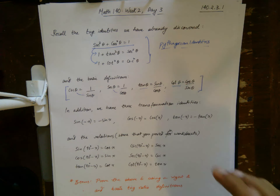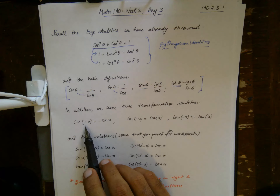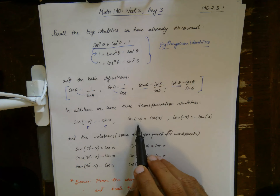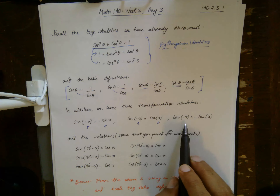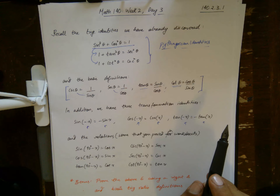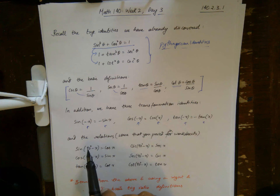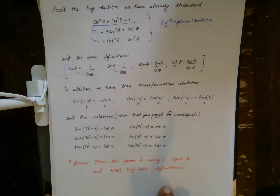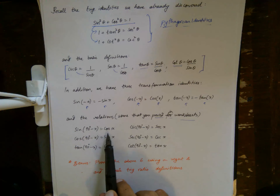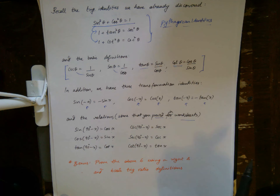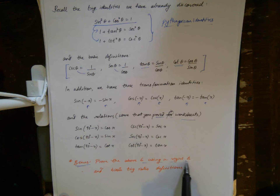We also have transformation identities: sine of negative x is negative sine x, cosine of negative x is cosine x, and tangent of negative x is negative tangent x. Lastly, we have relations like sine of (90 − x) is cosine, cosine of (90 − x) is sine, and tangent of (90 − x) is cotangent, some of which you proved in the Week 1 worksheet.